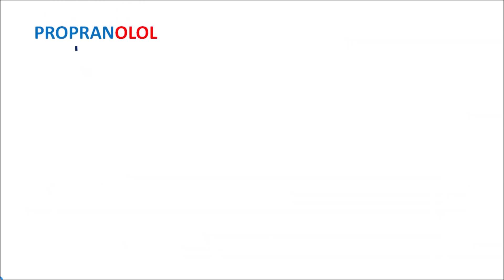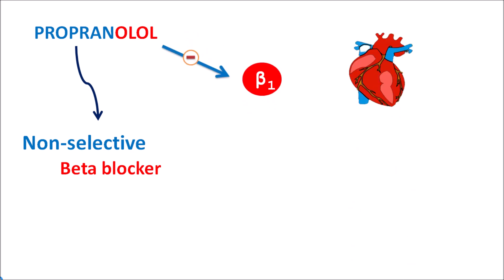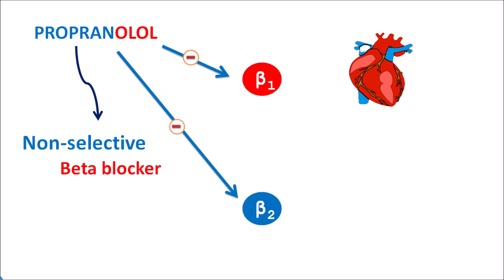Propranolol is a non-selective beta blocker. That means it can block the beta-1 receptors located on the heart, resulting in decreased cardiac work. That is why this drug is indicated for various cardiovascular disorders such as angina, tachycardia, hypertension, and myocardial infarction. But this drug not only blocks beta-1 receptors — it can also block beta-2 receptors. So it is not selective; it can block both of these receptors.